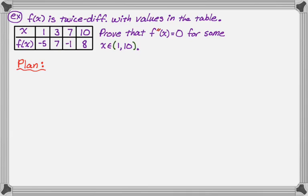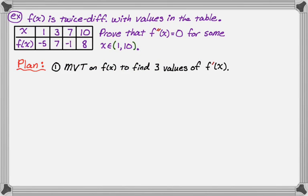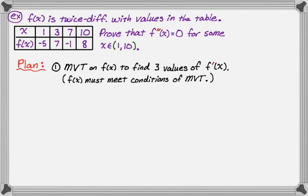So let's think about a plan. First, I want to reason about f double prime, but to do that I really need to know things about f'. So I'm going to use the mean value theorem on f(x) to find three values of f'(x) — looking between one and three, then three to seven, then seven to ten. That'll give me three values I know for f'. To do that, f(x) needs to meet the conditions of the mean value theorem, which I can see from the problem that it does. I'll call those points c1, c2, and c3.